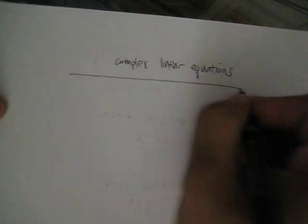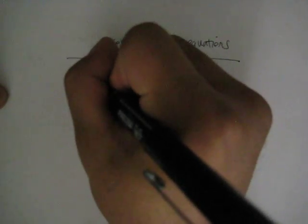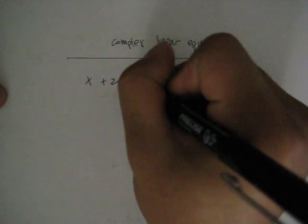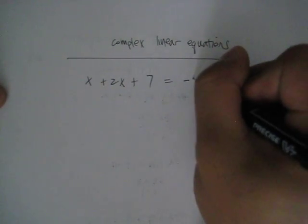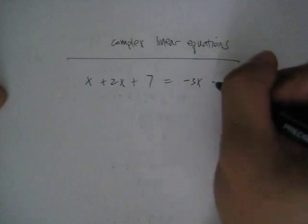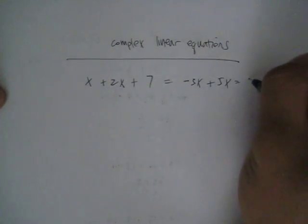Let's start off with the equation: x + 2x + 7 = -3x + 5x - 9.